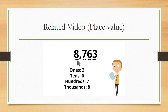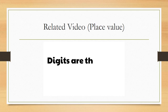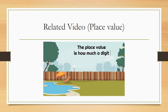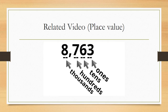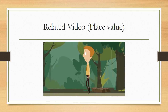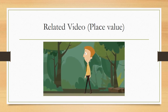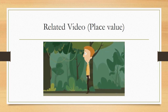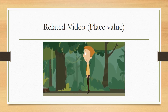To review: digits are the parts of a number. The place value is how much a digit is worth based on where it is. The place values we learned today are ones, tens, hundreds, and thousands. In the example of 8,763: there are three ones, six tens which is 60, seven hundreds which is 700, and eight thousands. So the number read out is eight thousand, seven hundred and sixty-three. Knowing where a digit is tells us what the value is. We hope you learned some cool things and we hope to see you next time.